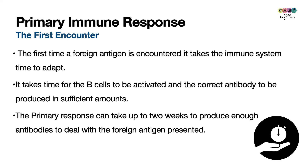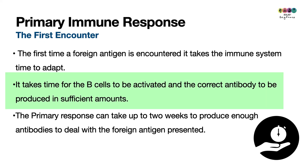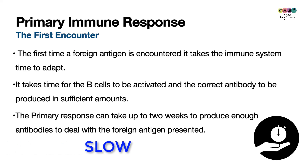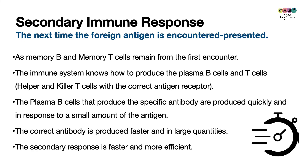The primary immune response is the first time your immune system encounters a particular foreign antigen. The first time it encounters it, it takes quite a few days — up to two weeks — to really adapt and figure out how to make the particular antibody. It takes time for those B cells to be activated and produce the correct antibody. So the primary response is slower and takes longer because your immune system is learning how to deal with that particular antigen.